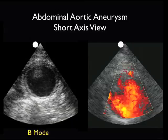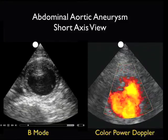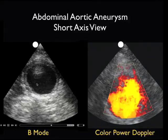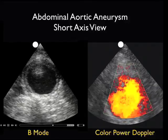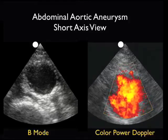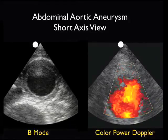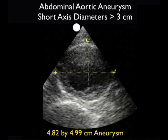Here's a short axis view of a very large abdominal aortic aneurysm in a patient who presented to the emergency department with abdominal and back pain. A small indicator arrow shows the large AAA in the B-mode image towards the left, with the spine as our landmark. The color power Doppler image towards the right shows pulsations of blood within this AAA. Measuring from outer wall to outer wall — including the inner lumen and outer thrombus — we get a measurement of 4.8 by 4.9 centimeters, meeting the criteria for a AAA greater than 3 centimeters.